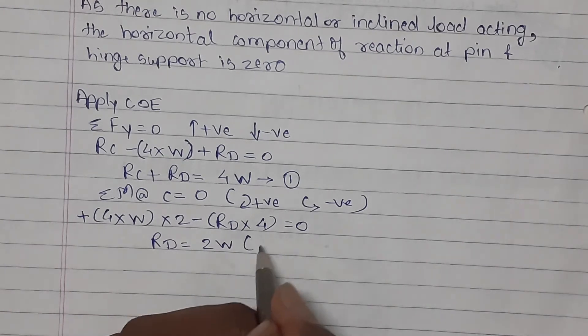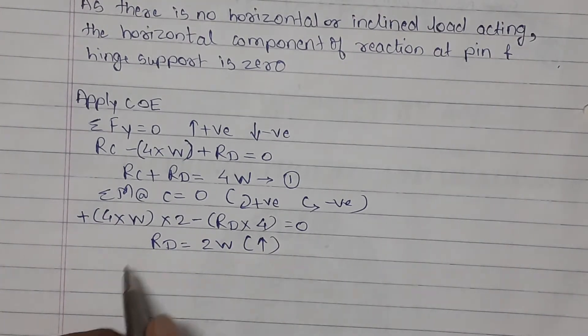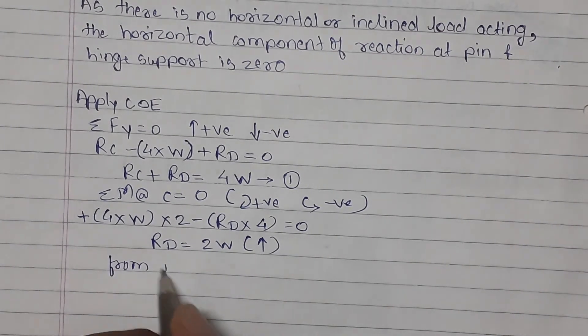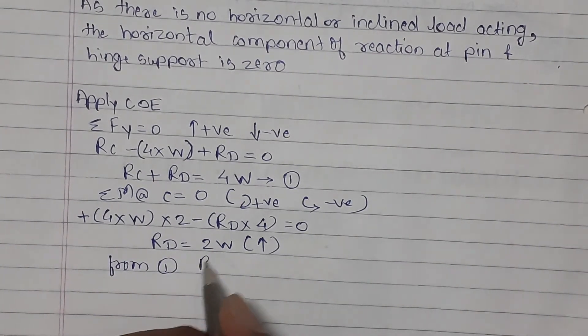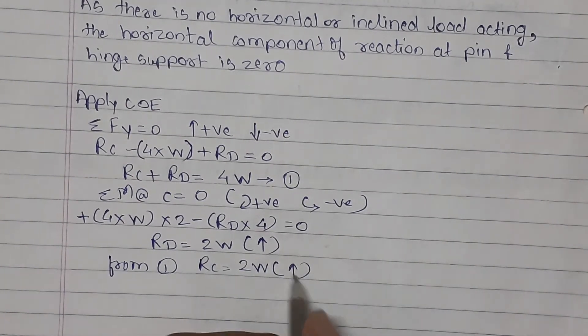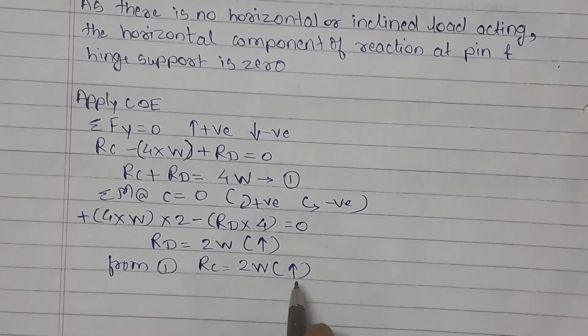Positive value means our assumption RD is acting upward is correct. So we will put this in equation 1. From equation 1 we will get value of RC equals to 2W. Now we got reaction at C, we got reaction at D. Our aim is to find reaction at A, B and D. So our A and B part is remaining.